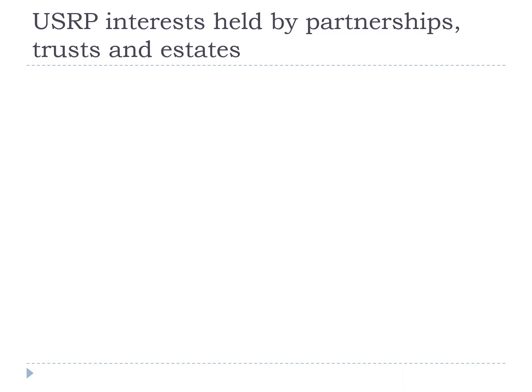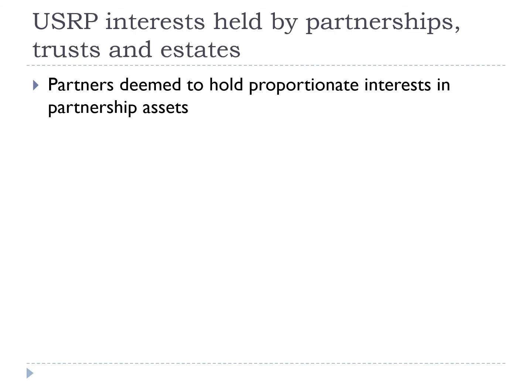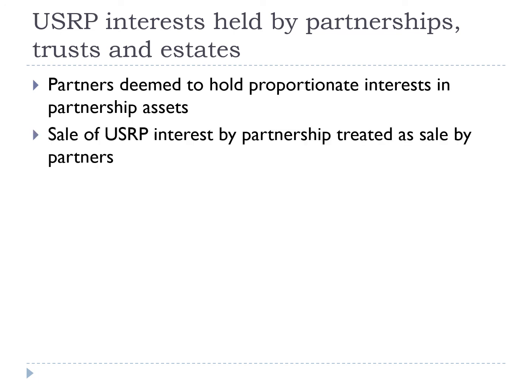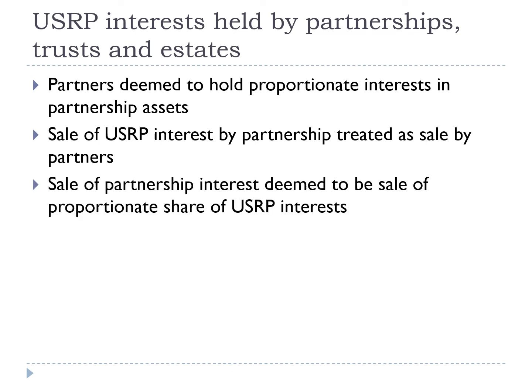A U.S. real property interest held by a partnership is generally deemed to be held by its partners. A partnership is never itself considered a U.S. real property interest because any U.S. real property interests held by the partnership are deemed to be held proportionally by the partners. Accordingly, if a partnership sells a U.S. real property interest, then the sale is deemed to have been made individually by the partners for purposes of U.S. tax and withholding. In addition, if a foreign partner sells an interest in a partnership that holds a U.S. real property interest, the partner is deemed to have sold a proportionate share of any U.S. real property interest held by the partnership.